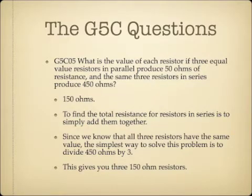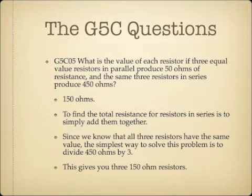What is the value of each resistor if three equal value resistors in parallel produce 50 ohms of resistance, and the same three resistors in series produce 450 ohms? The answer is 150 ohms. To find total resistance for resistors in series, you simply add them together. Since all three resistors have the same value, the simplest way is to divide 450 ohms by 3, which gives you 150-ohm resistors.